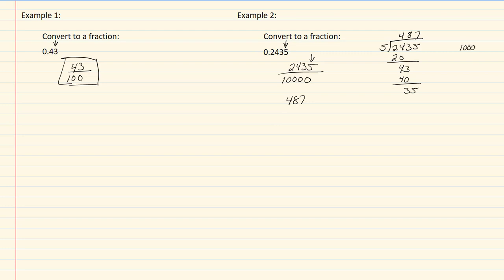And then 10,000 divided by five. Five goes into ten two times, and then there are three zeros, so it'll be over 2,000.